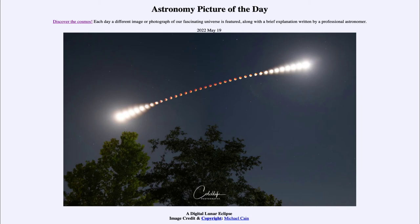That's why those central images appear red. The long-wavelength red light is what makes it through and into the shadow. So when the moon is in the deepest part of the shadow, it will look a deep blood-red color, as we see here.